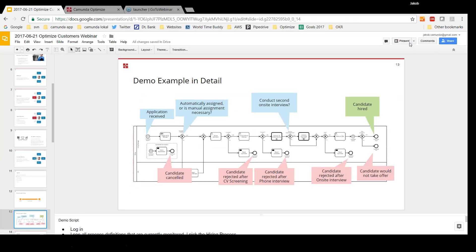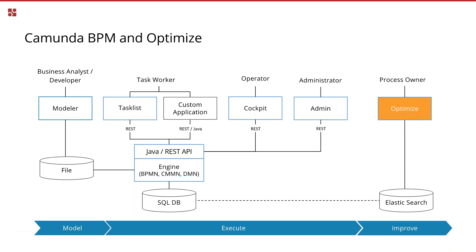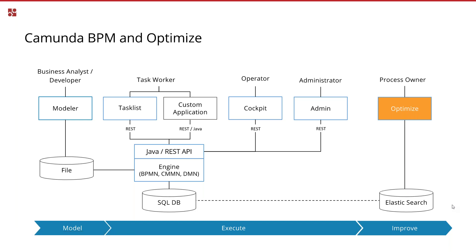Let's go back to the slides and talk about technical setup. Optimize is a standalone application — it comes with a Jetty server, it's super lean, and you can start it up in no time. It comes with its own persistence technology: Elasticsearch. This is about big data — we're able to load millions of process instances easily into Elasticsearch and have all those analytics running efficiently even if there are millions of process instances to investigate. We deliberately did not make Optimize work with relational databases, which are fine for Camunda BPM process execution but not sufficient for big data metrics like this.